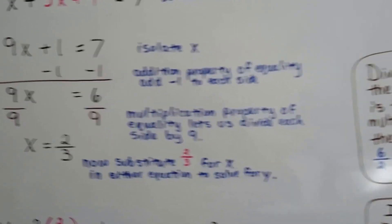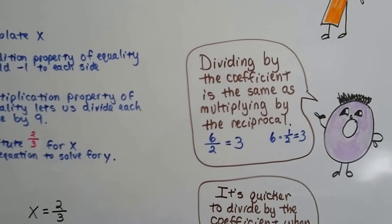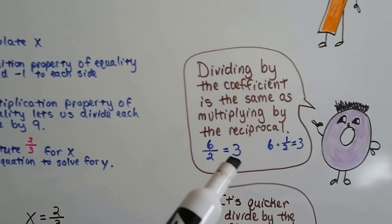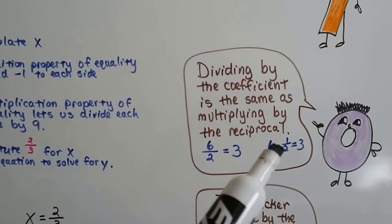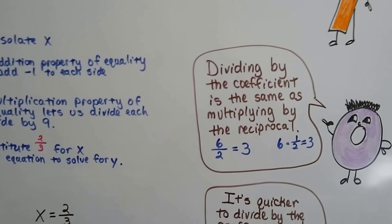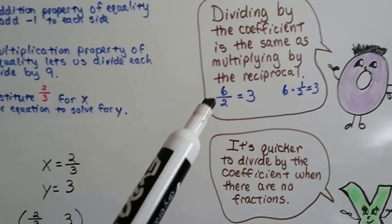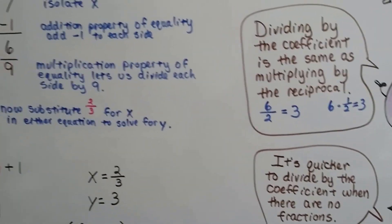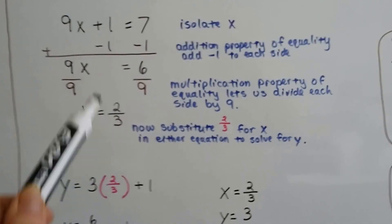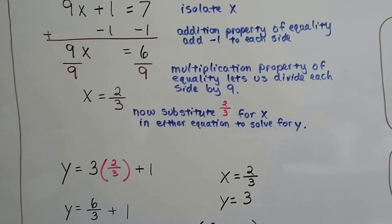So remember, when we're dividing by the coefficient, it's the same as multiplying by the reciprocal. If our coefficient is a 2, we can divide the 6 by the 2 to get 3. Or we can multiply the 6 by the reciprocal of 2, which is a half, to get the 3. It's the same thing. This is quicker to divide by the coefficient when there's no fractions in the problem. So there were no fractions here. It was just 9x equals 6. So it's quicker to divide by that coefficient 9. We simplified it to our 2 thirds.